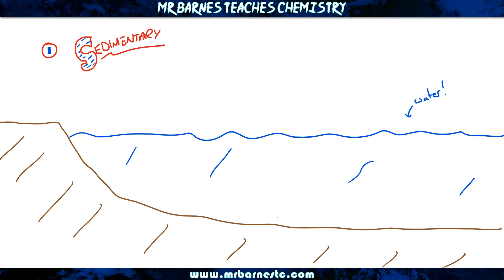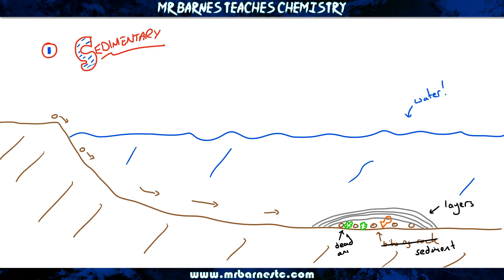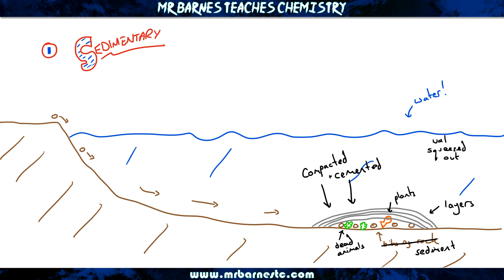So we'll start off with sedimentary rock. If we have a look at my nice diagram here, what first happened is you had little bits of rock that broke off from riverbeds or from the sides and fell into the water and got deposited. Now those bits of rock, which are called sediments, started to build up in layers. Those layers also contained dead animals and plants. Once the layers had built up, they became compacted — which means put under pressure — and cemented, which means the water got squeezed out of them and made that cement that turned it into sedimentary rock.